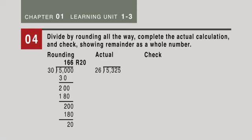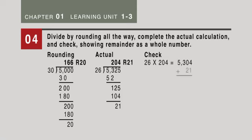In the actual calculation, 26 goes into 53 twice, with a remainder of 1, bring down the 2, that won't go, bring down the 5, 26 goes into 125 four times, with a remainder of 21. We can check by going 26 times 204, which is 5,304, add our remainder of 21, gives us 5,325.